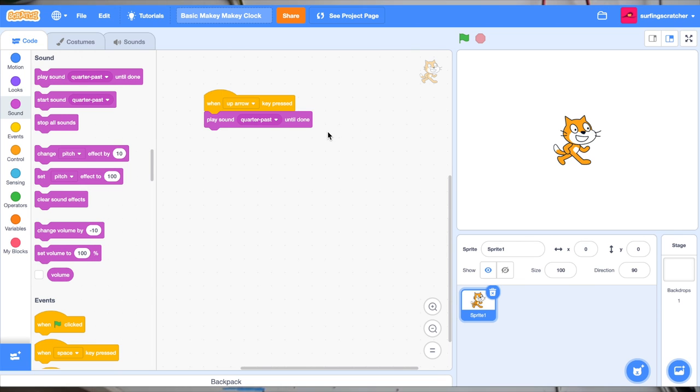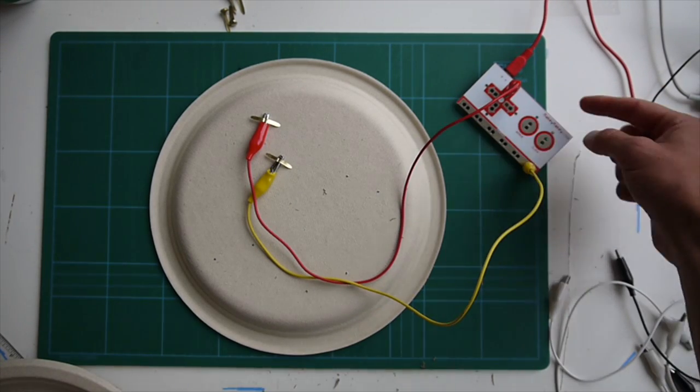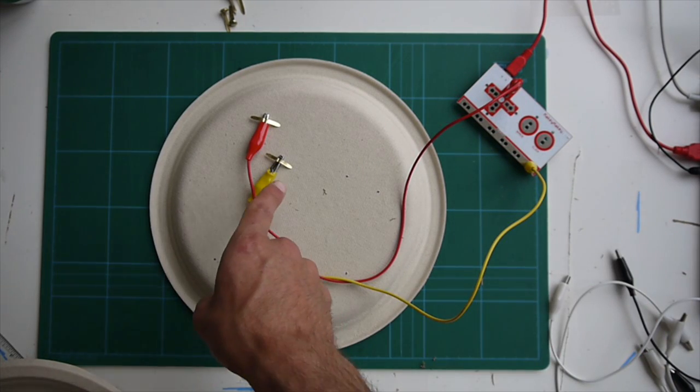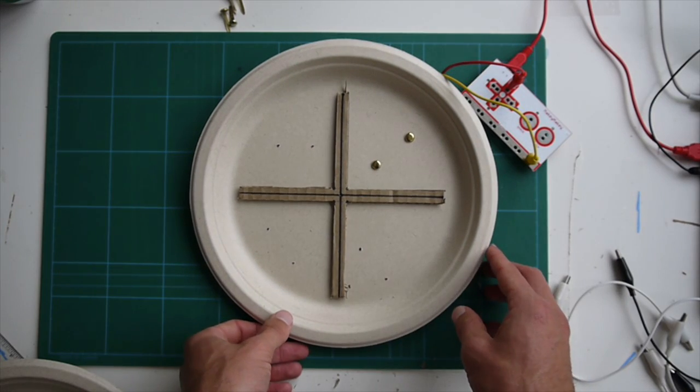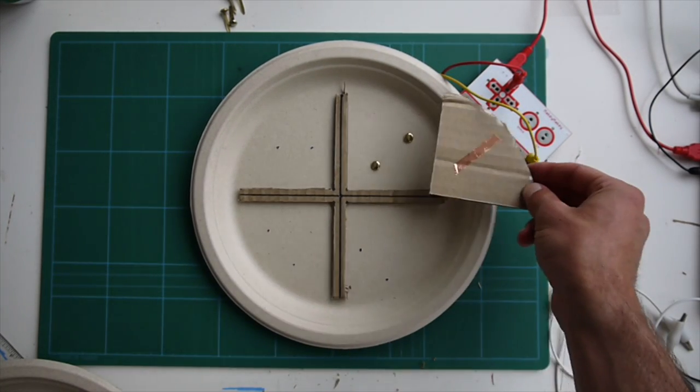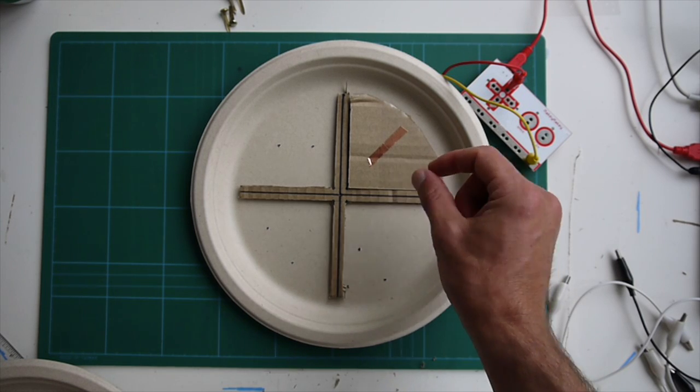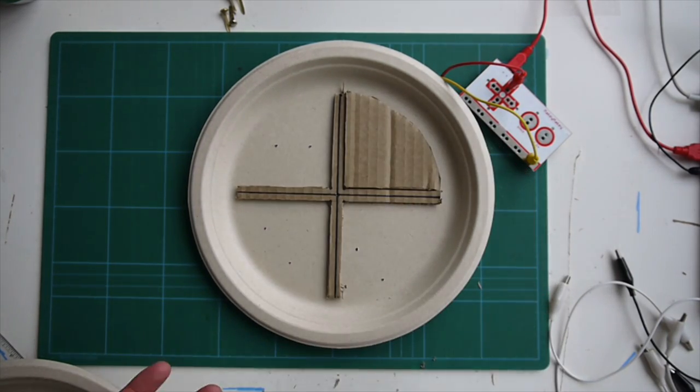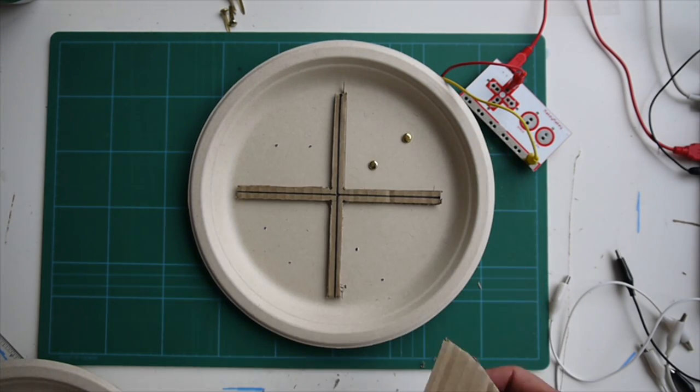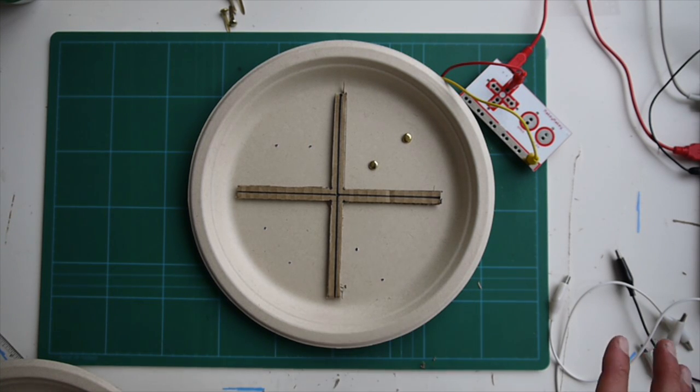Over here in Scratch I've just got a when the up arrow key pressed block and a play sound that I've just recorded and it just says quarter past. Over here in the Makey Makey you'll see that I've got the red cable connected to the up arrow and I've got the yellow cable connected to the ground and I've just fastened them to those split pins. So I'll turn our paper clock back over and I might just orient it so it looks like quarter past there. Then we've got our puzzle piece and when I overlap it that copper tape will connect, basically act as a bridge between those two split pins so it should activate the sound on Scratch. It's quarter past. It's quarter past.